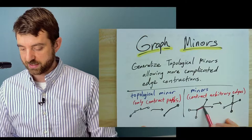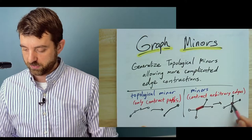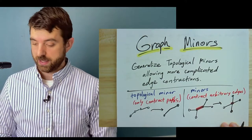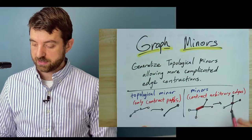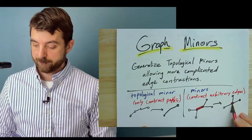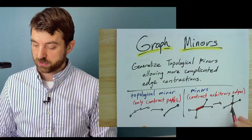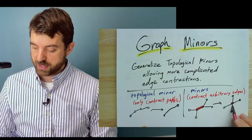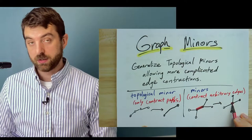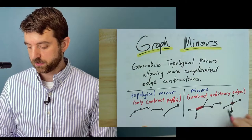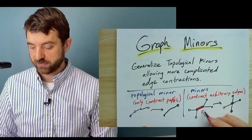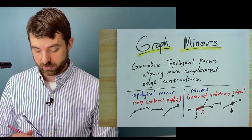And you can see that in this example right here. For instance, in this case, I contracted this edge to a single vertex. And this new graph is the contraction here. This is not a topological minor of the graph on the left, but it is a minor.